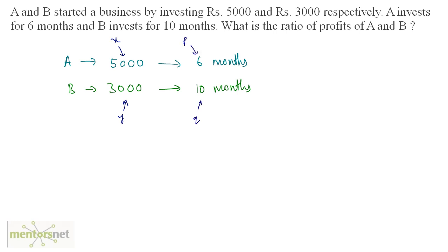Now we want the ratio of profits of A and B, and we know the formula: A's profit by B's profit equals X is five thousand, P is six months, divided by Y is three thousand times Q is ten. Canceling out all these zeros, we have five times six by three times ten. So five times two is ten and two times three is six, and this three and this three get cancelled out. So we have one by one, so the ratio is one is to one. That means that A and B earn the same amount of profit.